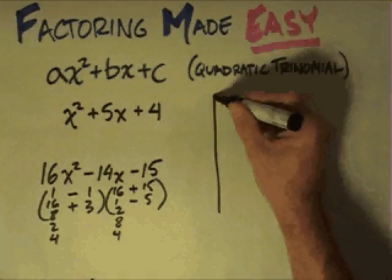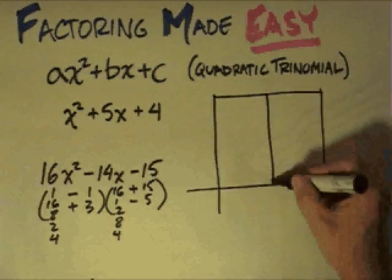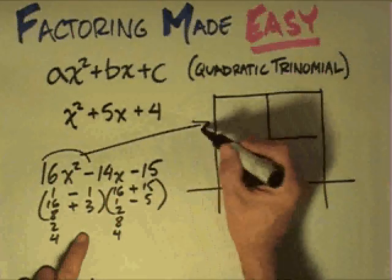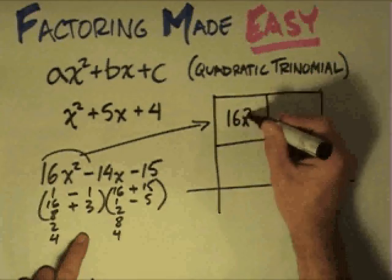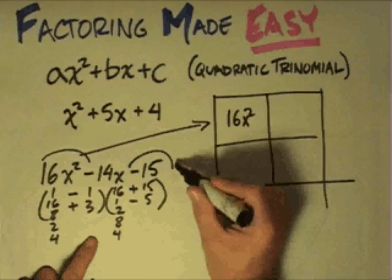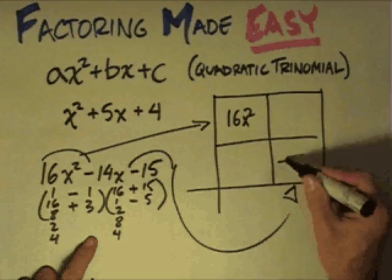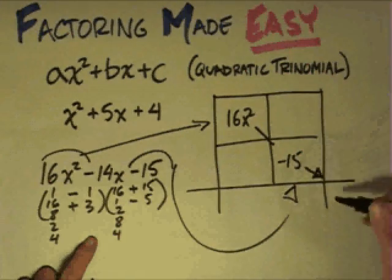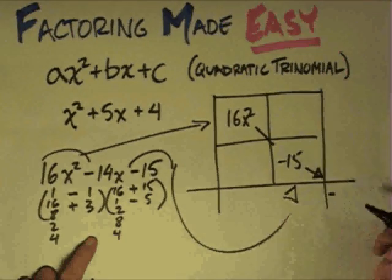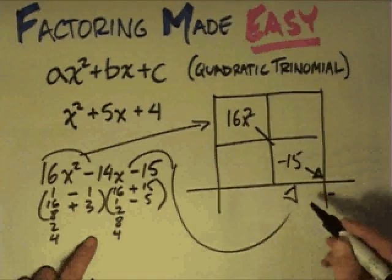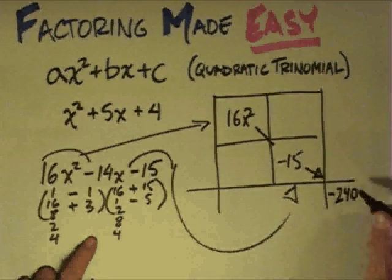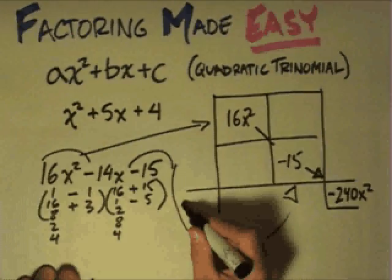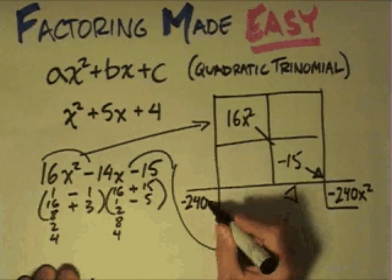We do that by drawing a box divided down the middle — it's just a way of getting organized so you remember what to do. The first term, 16x squared, goes in the top left, and the last term with its sign, minus 15, goes in the bottom right. Then I multiply these diagonally and write the product in the corner: that's minus 240x squared. I write that same value on the other side as a visual reminder — I'm looking for two things that multiply to give that same product.